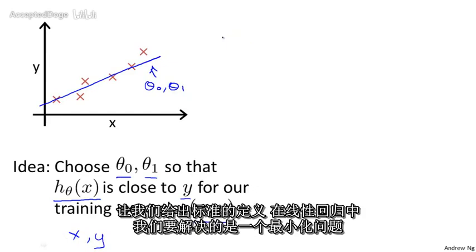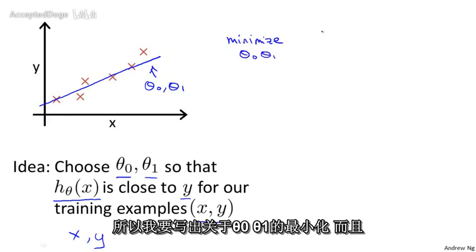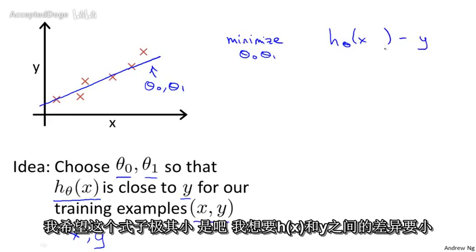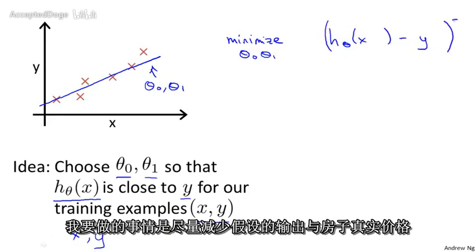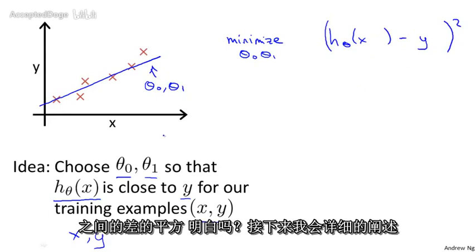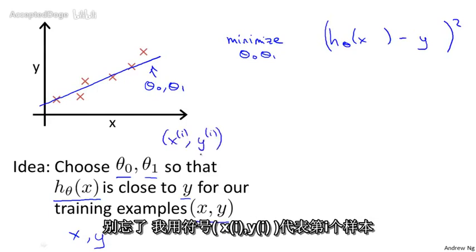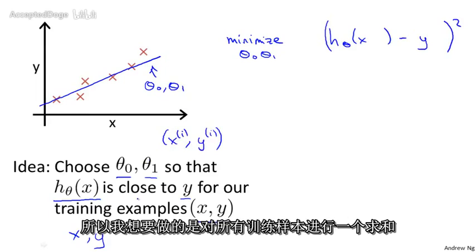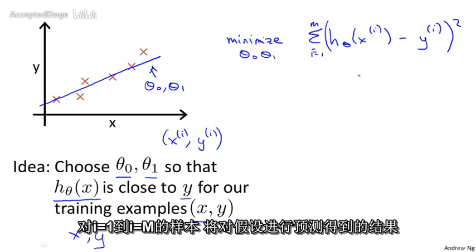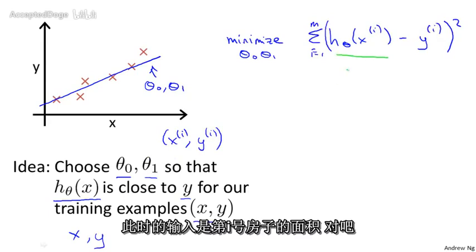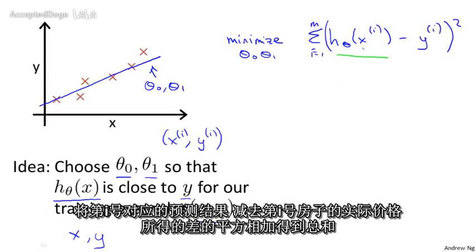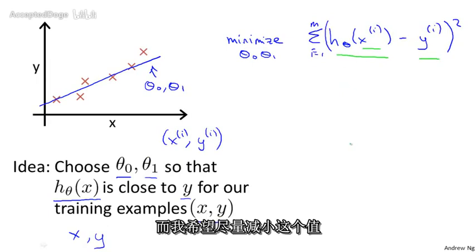So in linear regression, what we're going to do is I'm going to want to solve a minimization problem. So I'm going to write minimize over θ₀, θ₁, and I want this to be small. I want the difference between h(x) and y to be small. And one thing I might do is try to minimize the square difference between the output of my hypothesis and the actual price of the house. So let's fill in some details. Remember that I was using the notation (xⁱ, yⁱ) to represent the i-th training example.